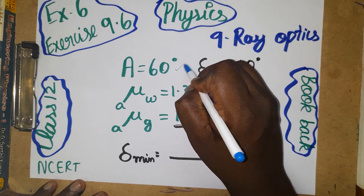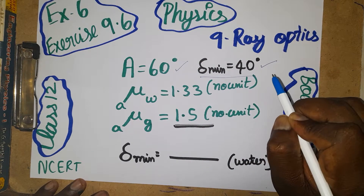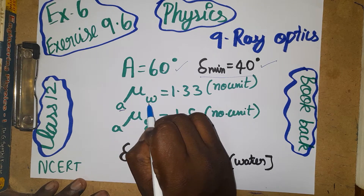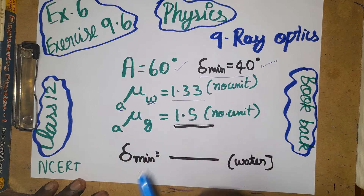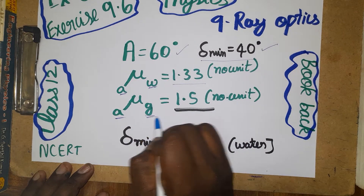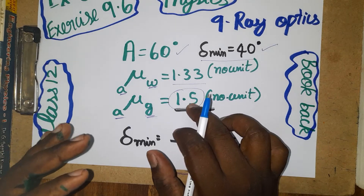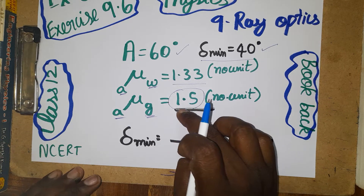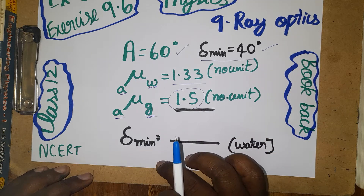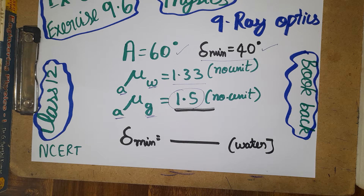First we will see the given data. The angle of the prism is 60 degrees. The angle of minimum deviation is 40 degrees. The refractive index of air to water is 1.33. We have to find the refractive index of air to glass — the answer should be close to 1.5.